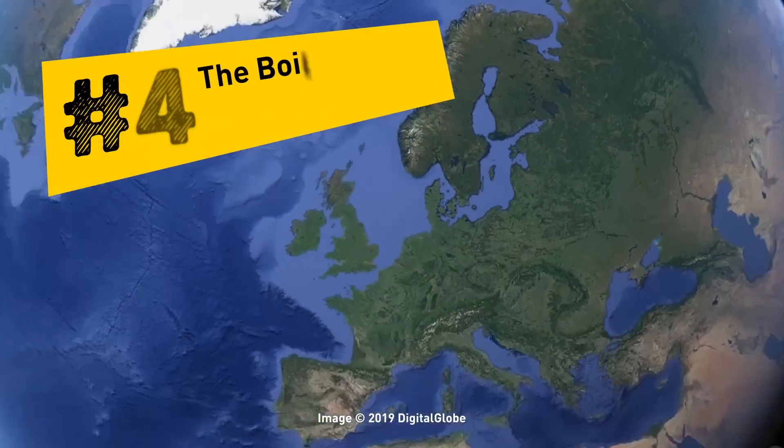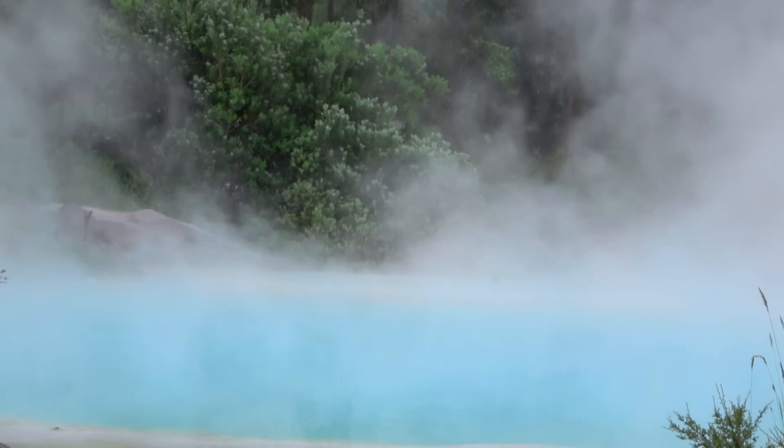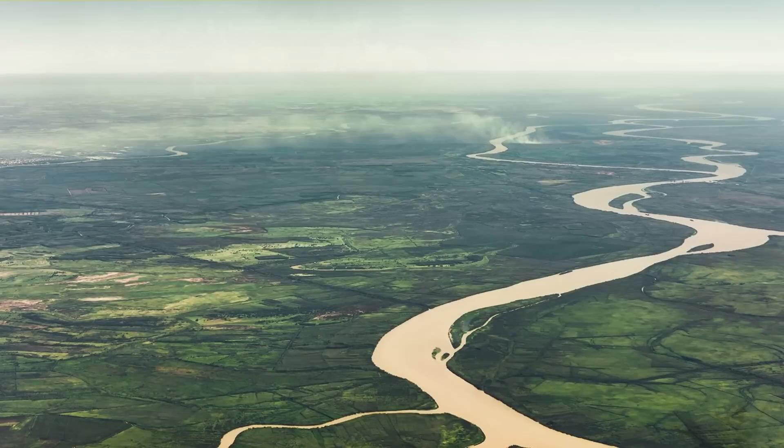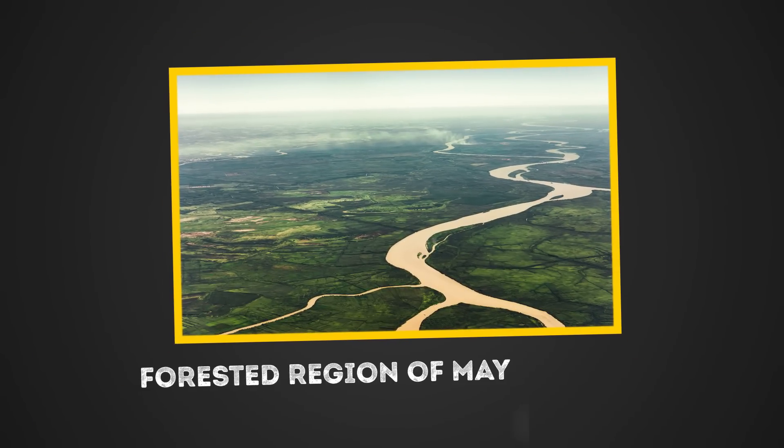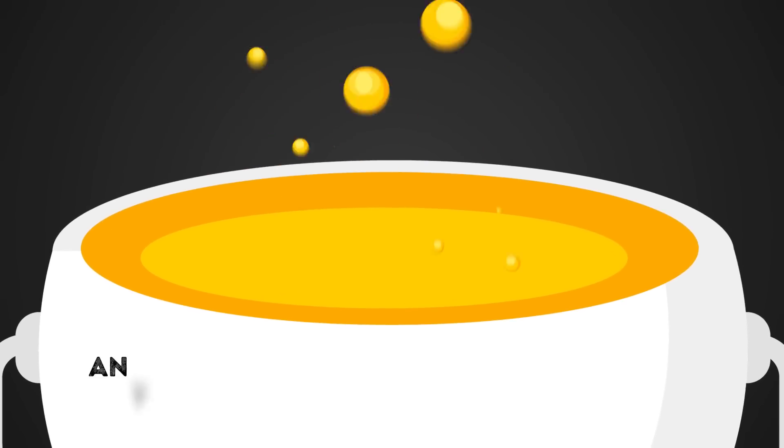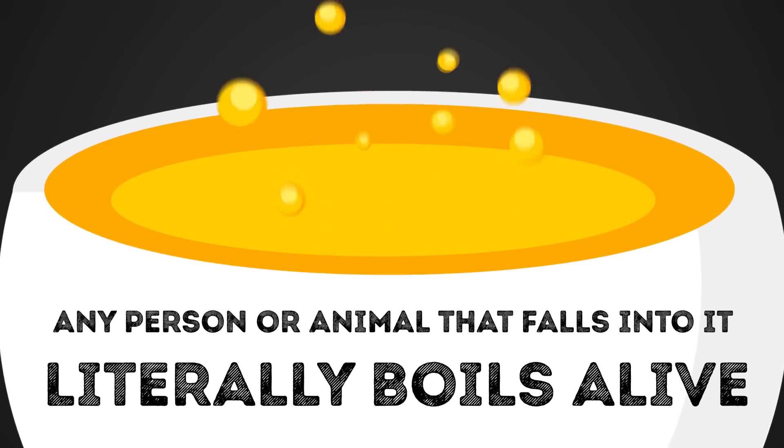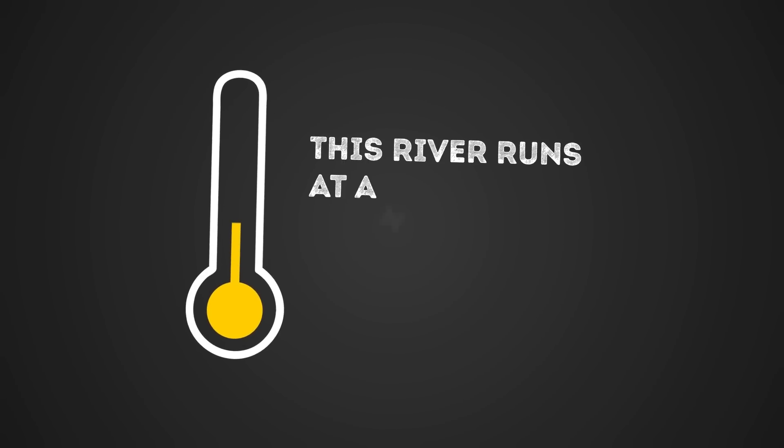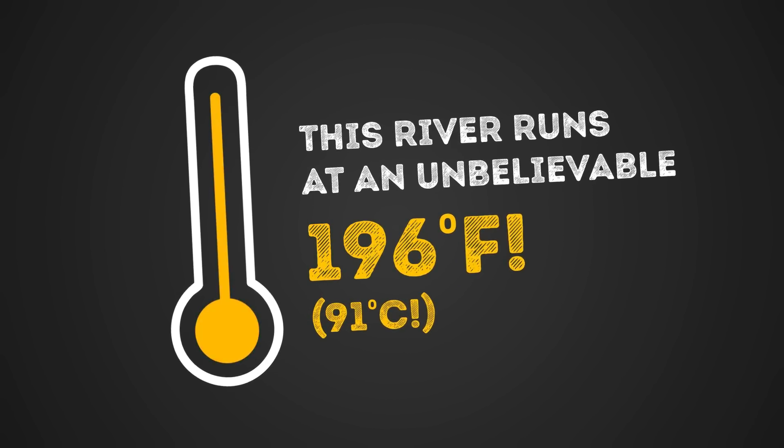4. The Boiling River in the Amazon. Sometimes lounging around in a jacuzzi can be incredibly relaxing. But this hot body of water takes things to a whole new level. Deep in the Amazon forests lies a floating river in the forested region of Mayantuyacu that boasts temperatures so hot that any person or animal that falls into it literally boils alive from the inside out. That's right! This river runs at an unbelievable 196 degrees Fahrenheit. Dang, that's hot!